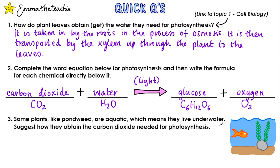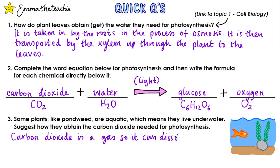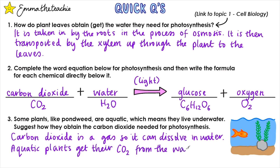Question three: some plants like pond weed are aquatic, which means they live under water. Suggest how they obtain the CO2 needed for photosynthesis. Carbon dioxide is a gas so it can dissolve into water; therefore, aquatic plants get their carbon dioxide from the water around them.